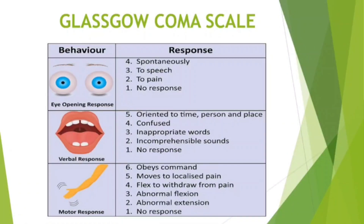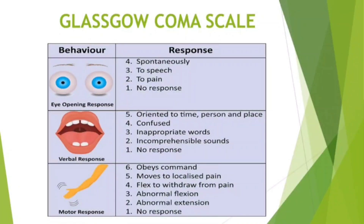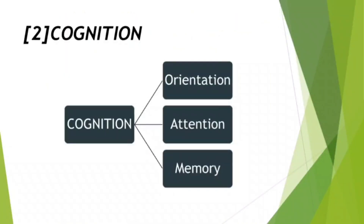A score of 13 or higher indicates mild brain injury, a score of 9 to 12 indicates moderate brain injury, and a score of 8 or less represents severe brain injury. Cognition is divided into orientation, attention, and memory.